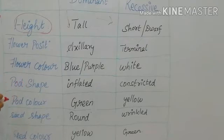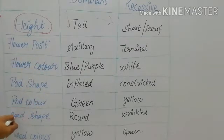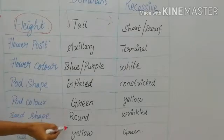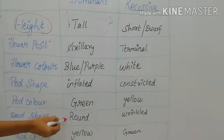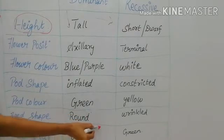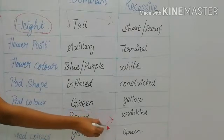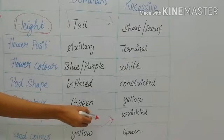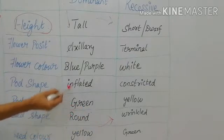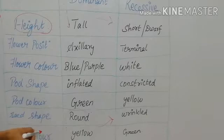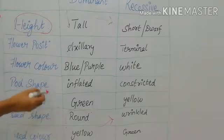Next is the dihybrid cross. If two characters are involved — for example seed shape (round) and seed color (yellow) — if round yellow, which is dominant, was allowed to cross with wrinkled green, which is recessive, then it is known as a dihybrid cross because two characters are involved. If three characters are involved, then it is known as a trihybrid cross.